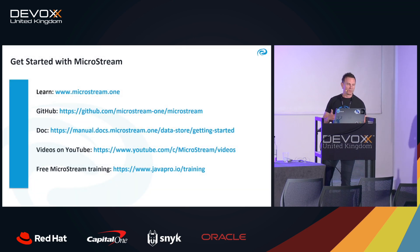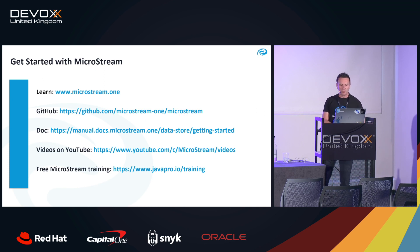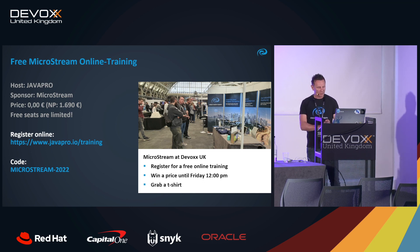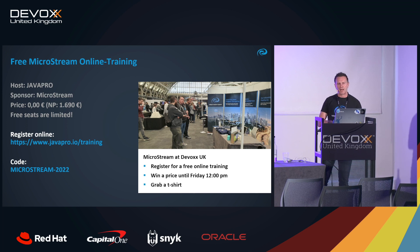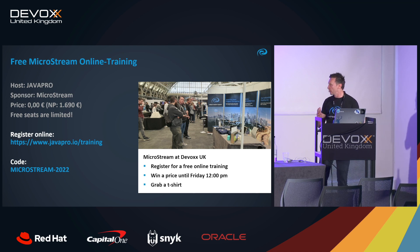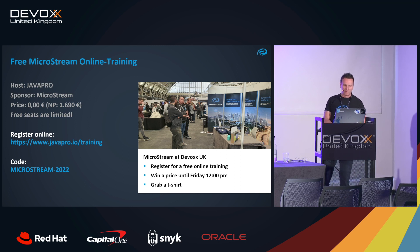To learn more about MicroStream, you can download the code from GitHub, find documentation on our website, and watch videos on YouTube. We also offer free MicroStream training — go to the Java Pro IO training website. It normally costs money, but with registration code 'microstream2022' you can book the online course for free — it's actually two days of training. If you're interested, book a training, watch the videos, play around, and give us feedback at our booth where you can also join a raffle and win prizes.